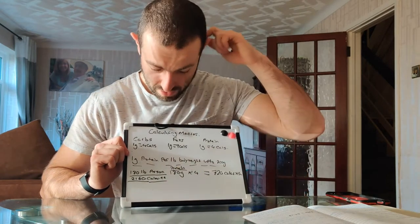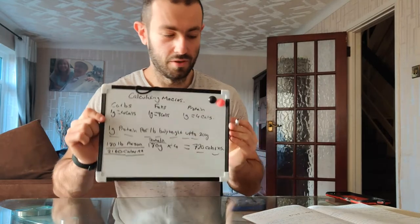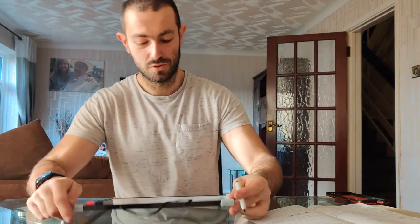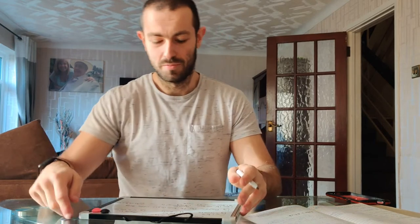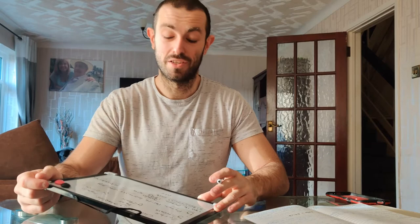Next we are going to work out your carb sources. Carbs are 4 calories per gram. Actually, we are going to work out fats first. I find that if we work out the fats first, it means that we can have the carbs left in our diet, made from the rest of our calories left.